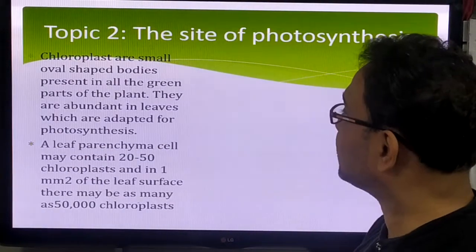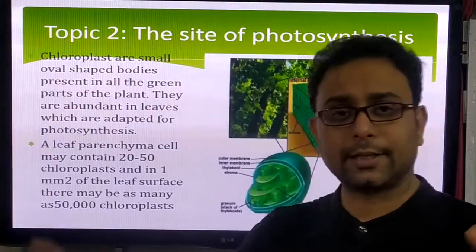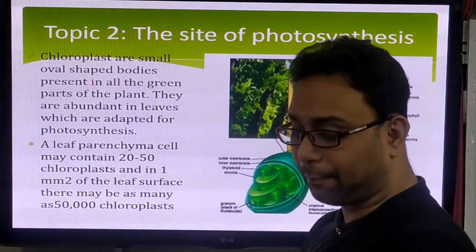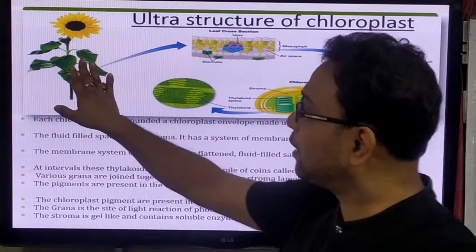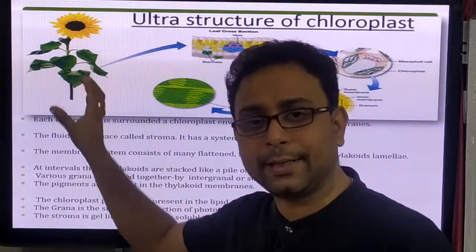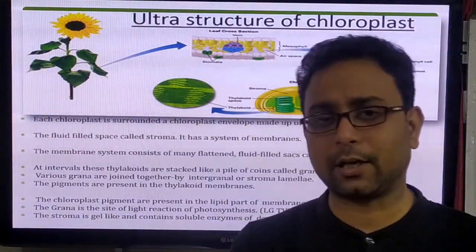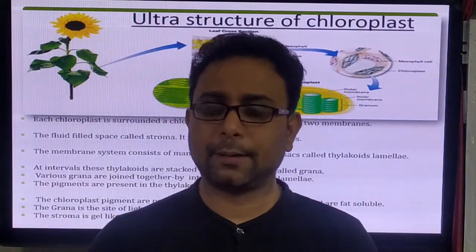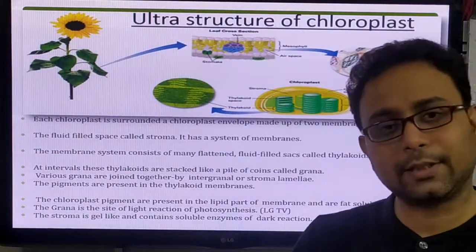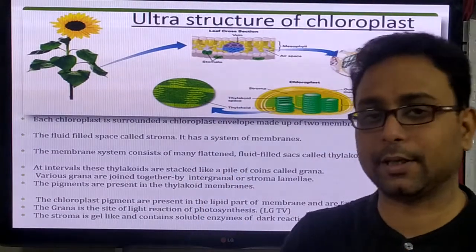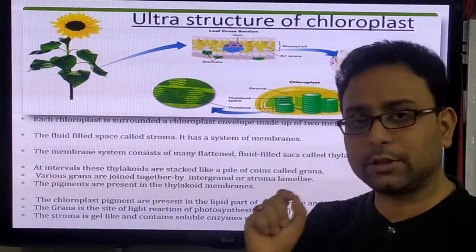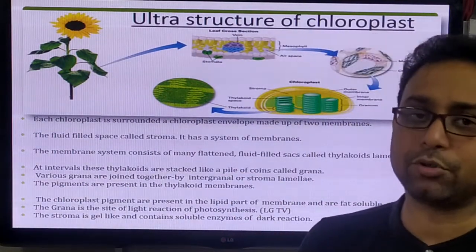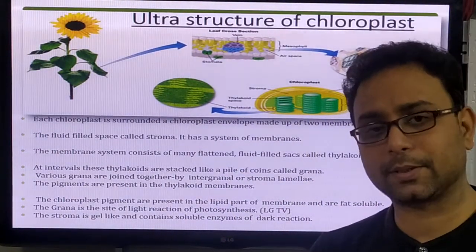Next, the site of photosynthesis — that means, where is photosynthesis happening? Photosynthesis happens in green plants, specifically in the leaf. But also in some other sites, such as the green stem, photosynthesis can happen. Photosynthesis occurs wherever chloroplasts, the most important cell organelles, are present.